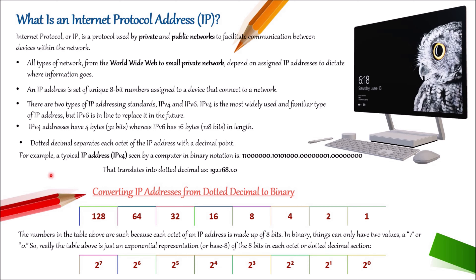A typical IPv4 address as seen by a computer in binary notation looks like a sequence of bits. We can translate this into dotted decimal notation. To convert an IP address from dotted decimal to binary: each octet of an IP address is made up of 8 bits, and in binary, things can only have two values — 1 or 0. The table is an exponential representation, or base 2, of 8 bits in each octet.